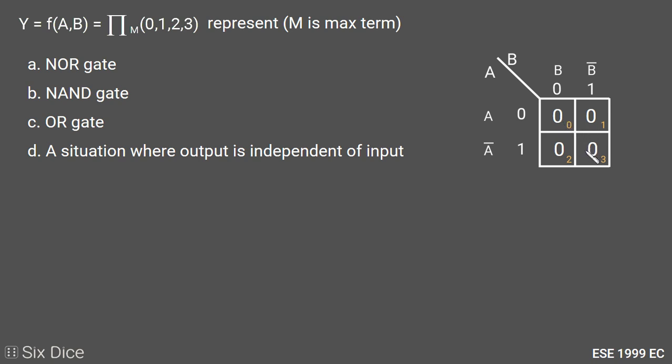So we will make a quad and this will be minimized as 0. So our function is 0 and doesn't depend on any input here. So this function represents a situation where output is independent of input, so option D is the right answer for this question.